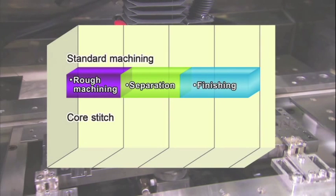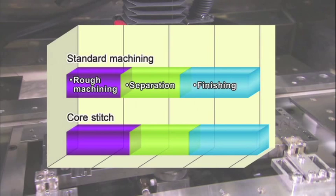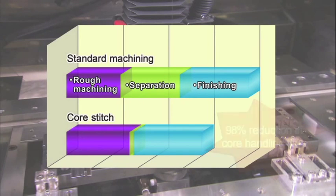Rough machining takes somewhat longer than standard machining, but the time required for core removal has been reduced by 98%, cutting total processing time significantly.